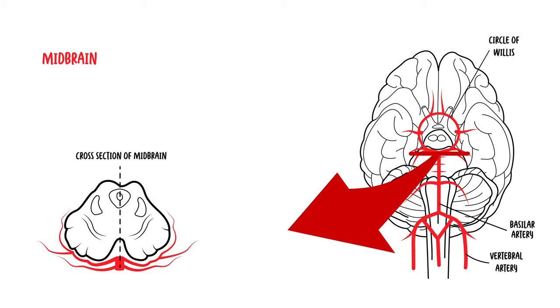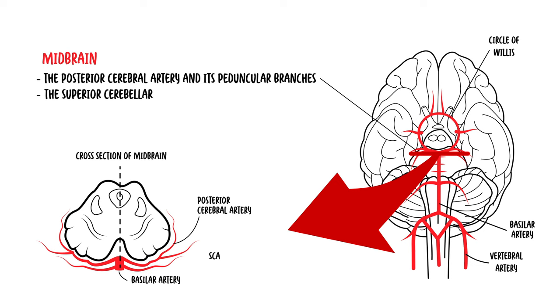The vascular supply of the midbrain is from the basilar artery and its branches. The major vessels are the posterior cerebral artery and its peduncular branches, the superior cerebellar artery, the posterior choroidal artery, and the interpeduncular branches of the basilar artery.